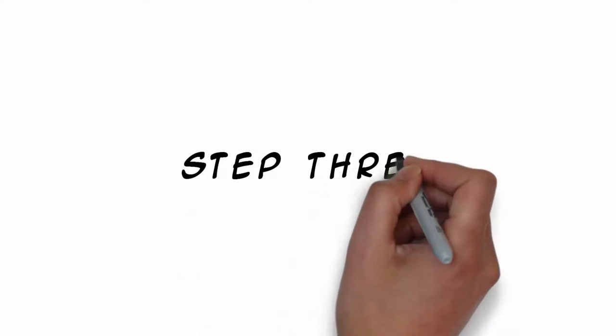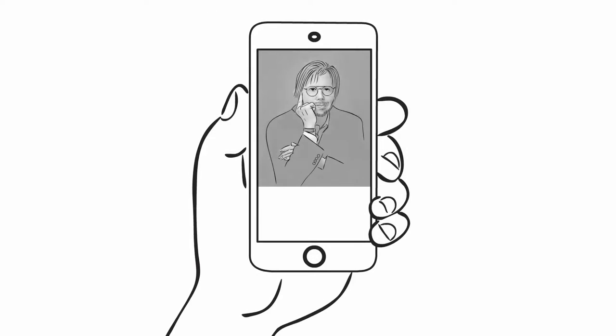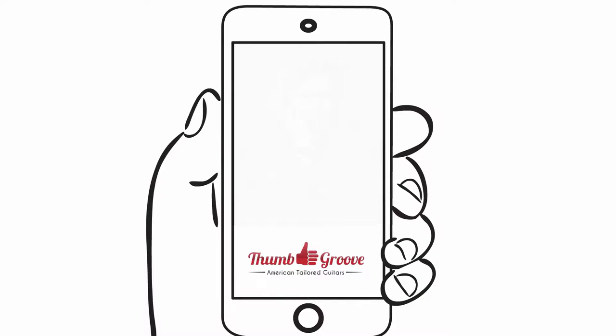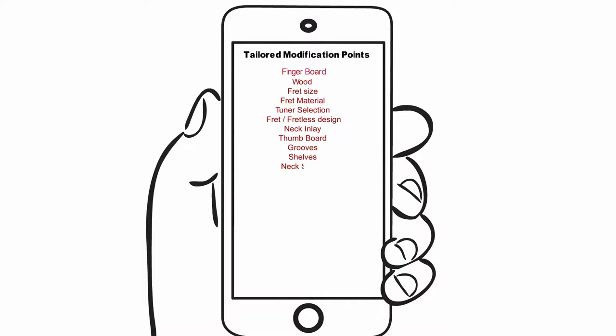Step 3: A phone consult follows with Steve Johnston, the founder of Thumb-Groove, reviewing tailoring points that can be applied from the tailor kit. In all, over 20 modification points from bridges and pickups to fret size and materials are selected with your direct input, allowing for the guitar to be tailored to your exact specifications.